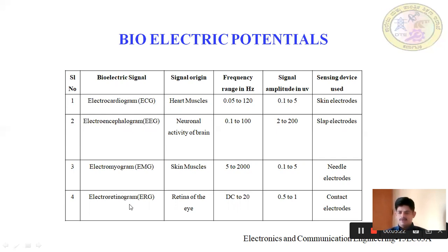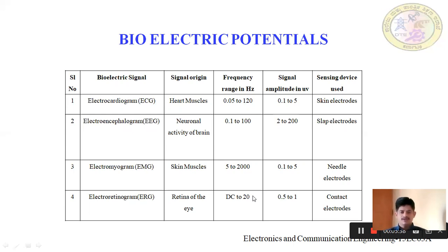Next is the electroretinogram, in short ERG. It is a signal recorded from the retina of the eye. Normally the frequency will be DC to 20 hertz — DC means zero frequency, so from 0 to 20 hertz. The voltage is 0.5 to 1 microvolts. Normally contact electrodes are used to record this signal.